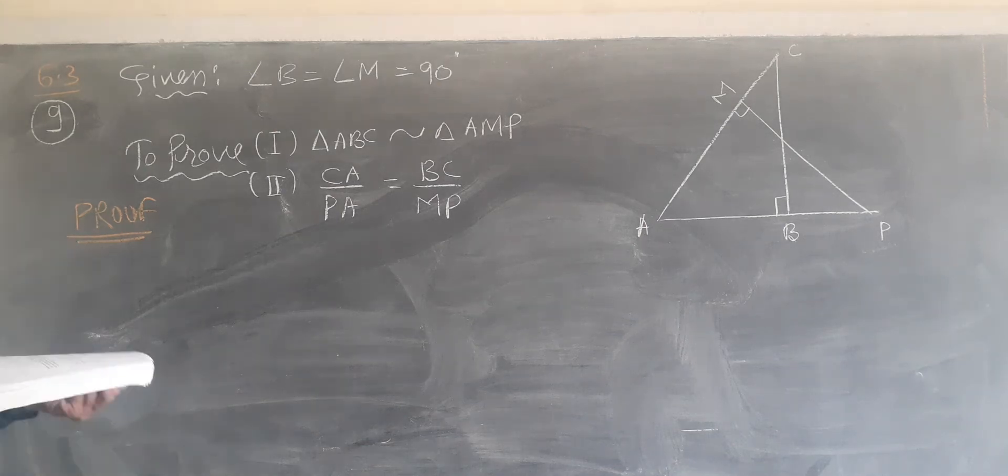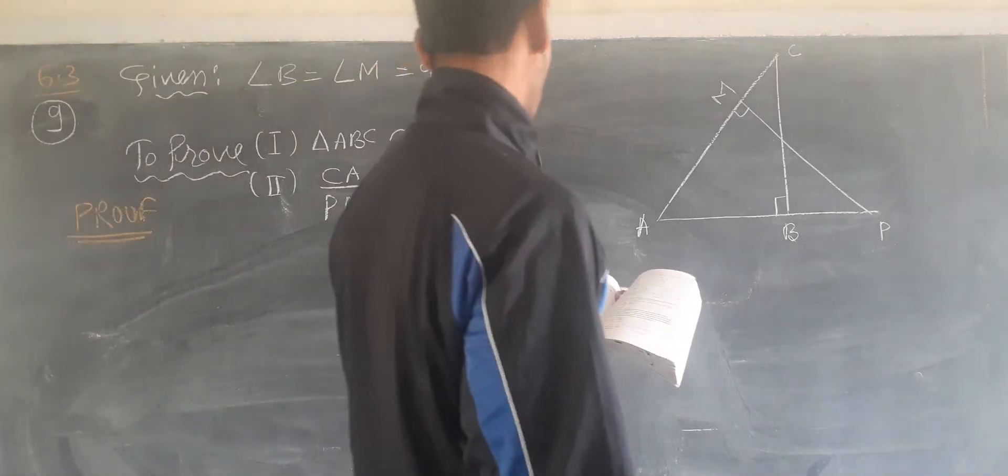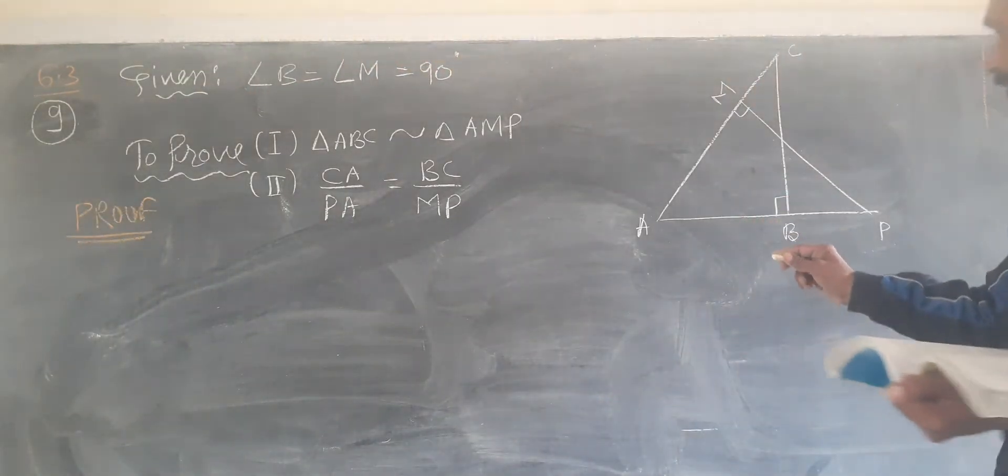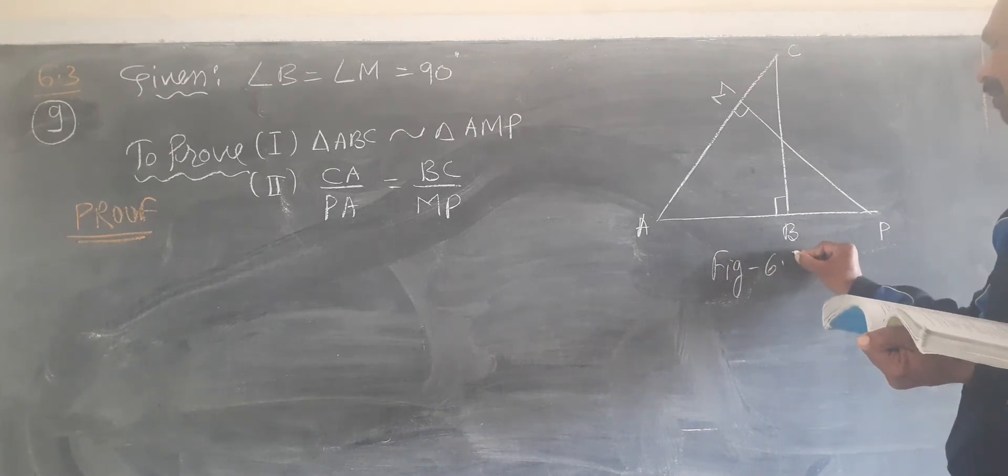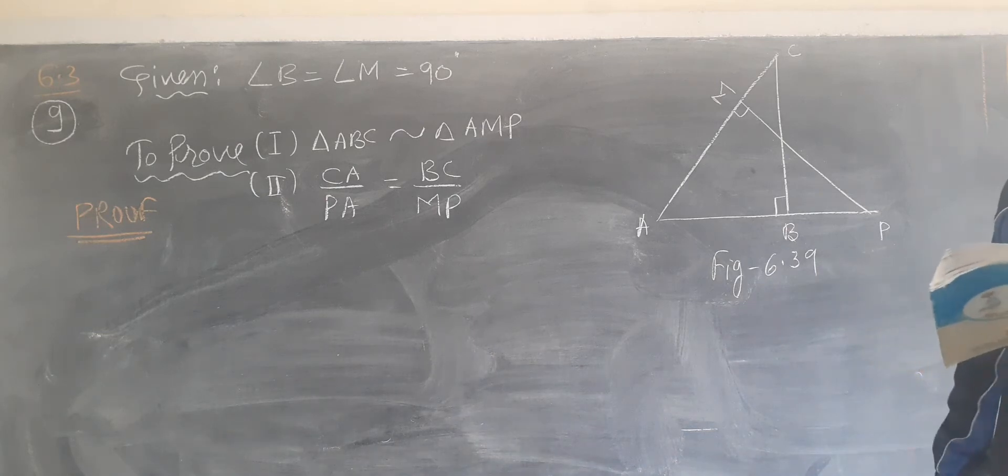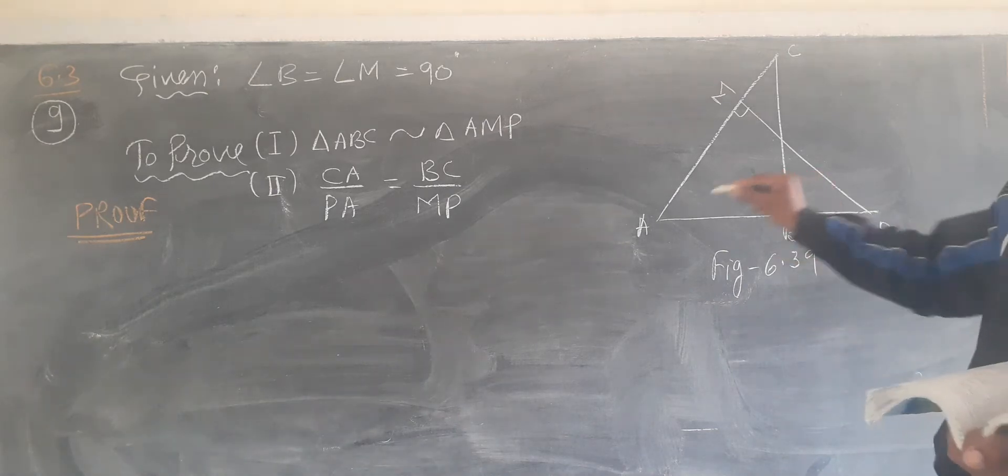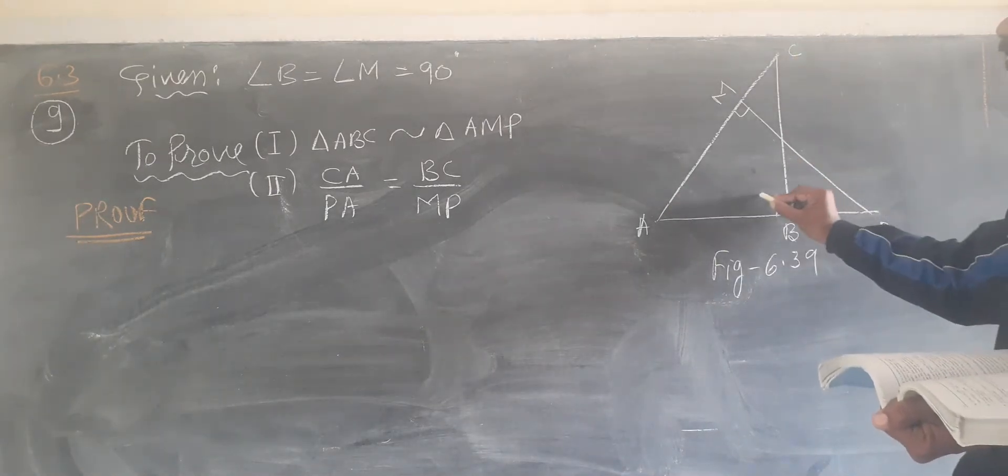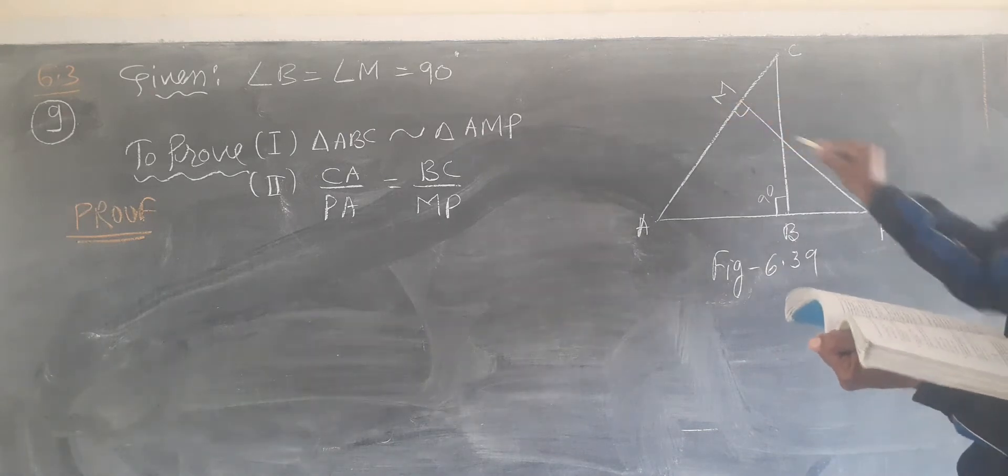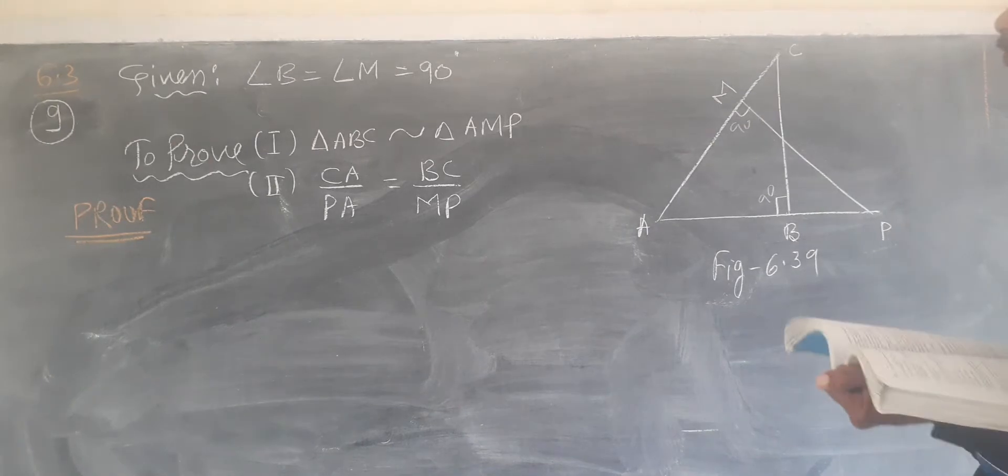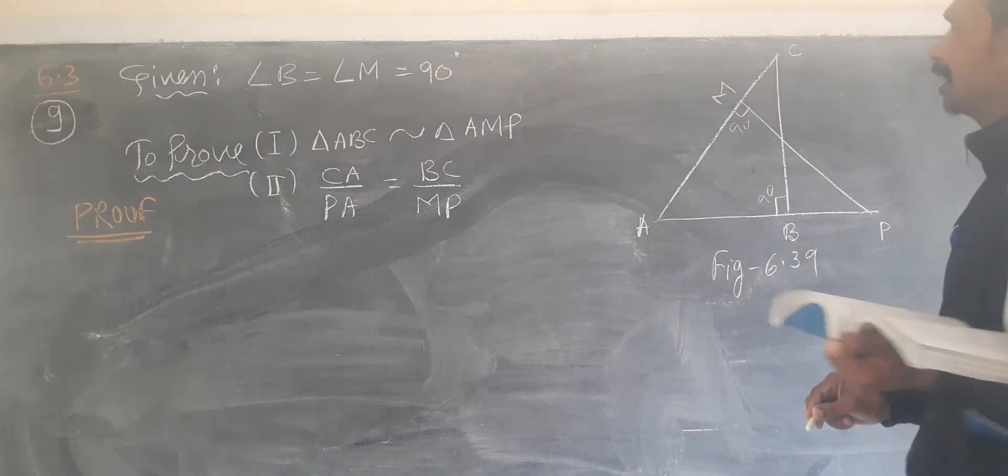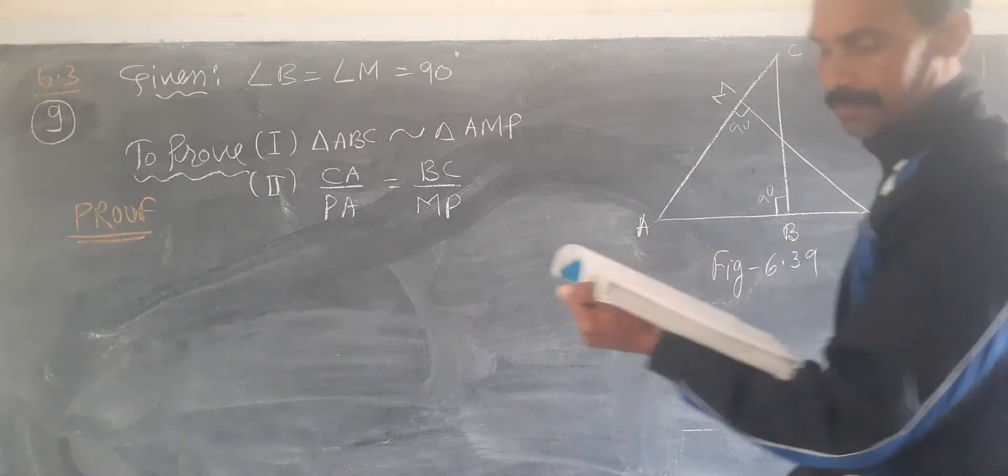Question 9, Exercise 6.3. Given in figure 6.39, ABC and AMT are two right triangles. Angle B equals angle M equals 90 degrees. We write angle B, angle M equal to 90 degrees. ABC is angle ABC, and AMT.